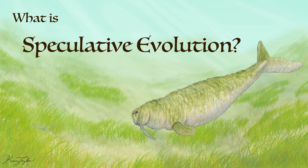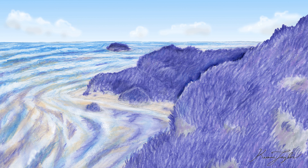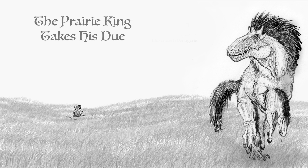Speculative evolution is a genre of speculative fiction that hypothesizes fictional organisms and their origins. It is often used in science fiction to explore the biology of distant planets, postulate the future of our planet's flora and fauna, and to hypothesize how Earth's own history might have been different had certain context-altering events not occurred.